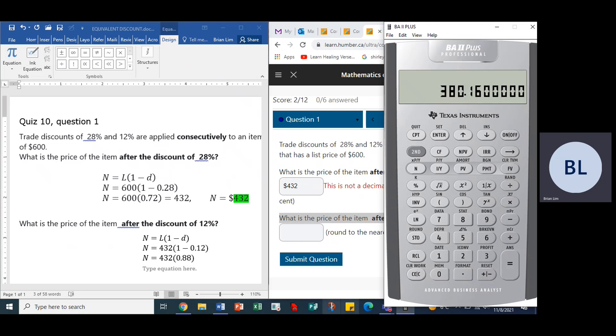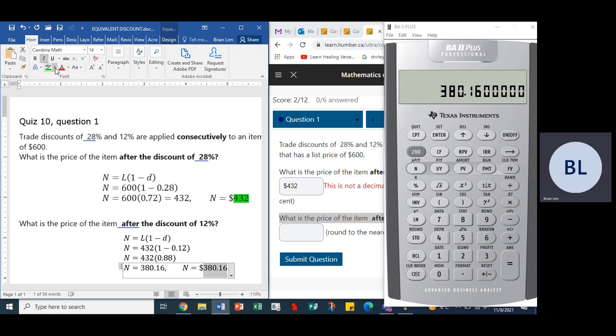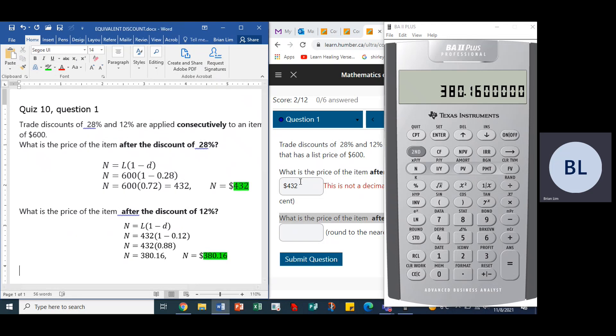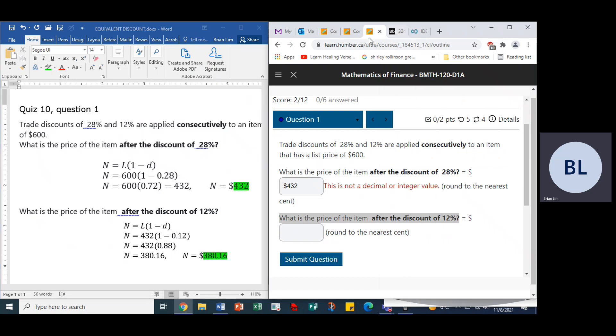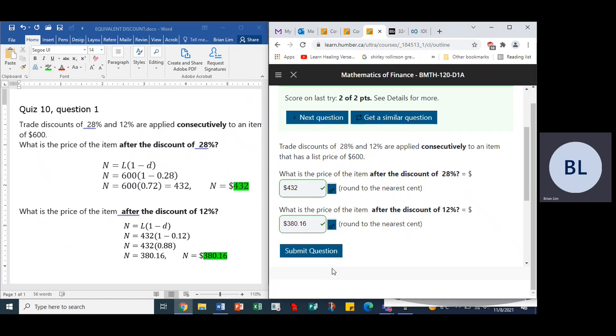Now we will multiply that by 432 and get an answer of $380.16. We could actually put the dollar sign in there: $380.16, and that indeed would be the answer. Let's go back to the question and submit the answer. Yes, it does accept the dollar signs in there.